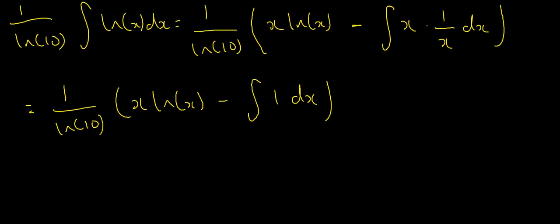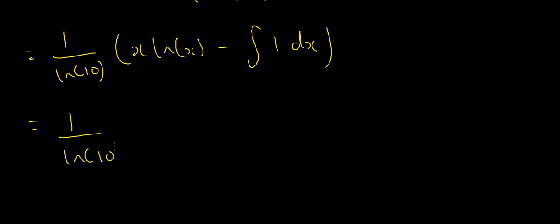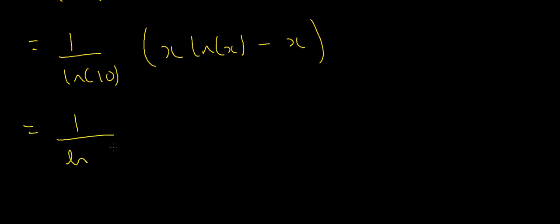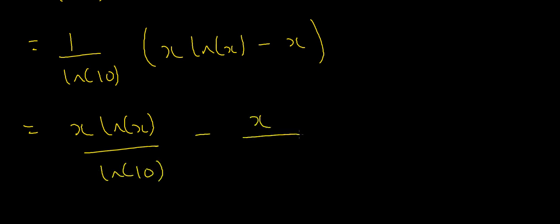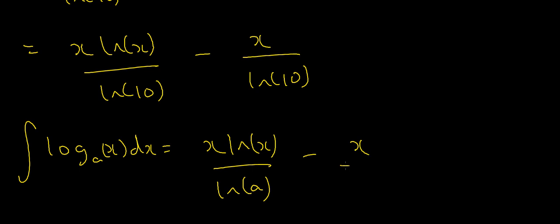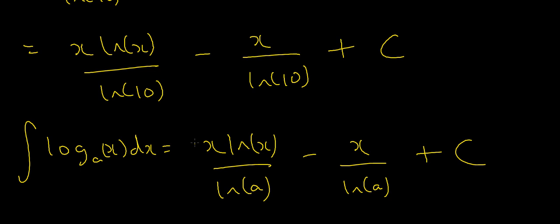Multiplying out, the integral of log base 10 of x equals x·ln(x) divided by ln(10) minus x divided by ln(10). More generally, the integral of log base a of x dx equals x·ln(x) divided by ln(a) minus x divided by ln(a), plus a constant C since this is an indefinite integral. That's how you integrate the logarithm base a of x with respect to x.